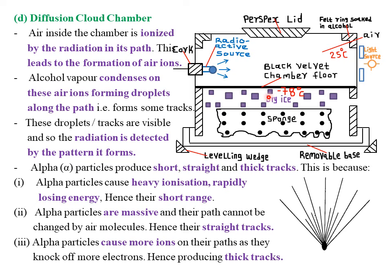The dry ice is usually at negative 78 degrees Celsius. The other name for dry ice is solid carbon dioxide. The function of dry ice or solid carbon dioxide in the lower compartment of the diffusion cloud chamber is simply to cool the alcohol vapor below the condensation temperature.